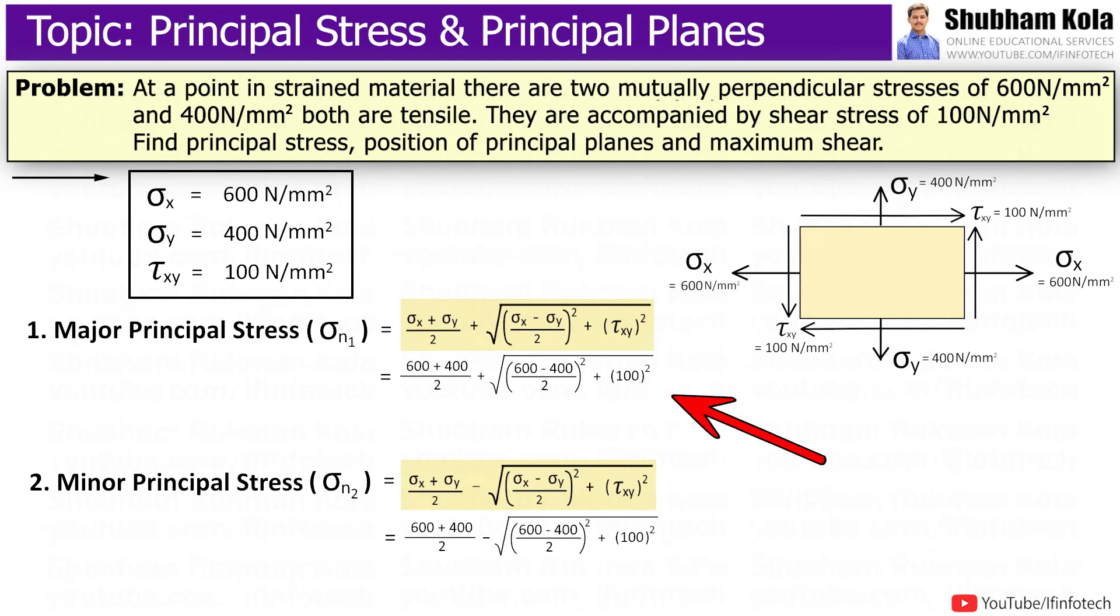So I will put these values in major principal stress formula. And I will calculate major principal stress, that is sigma_n1, that will be 641.42 N per mm², which is tensile.